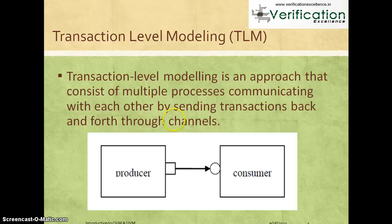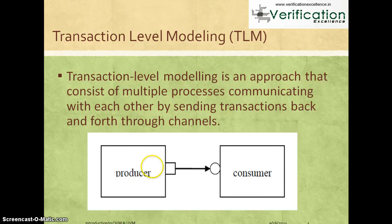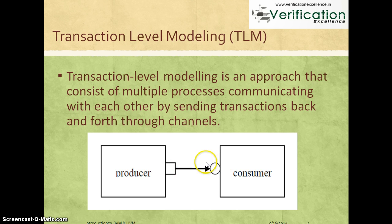A typical example would be a producer-consumer model where you have two components: a producer that produces some information and a consumer that keeps consuming that information. You can model the producer and consumer as two components, and instead of modeling all the information flowing between them at a low level — signal level or bit level — you group everything into a transaction and use a channel, queue, or mailbox to pass that transaction between producer and consumer. This modeling concept is called transaction level modeling.